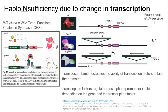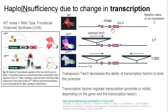Now, in homework and in exams, I would ask you which of these are more likely to affect the phenotype. And then there will be some order. Is it a mutation in the exons? Is it a mutation in the introns? Or is it a mutation in the promoter sequence?